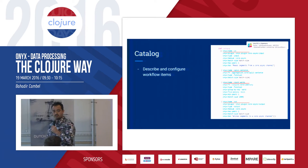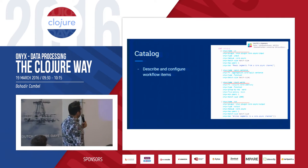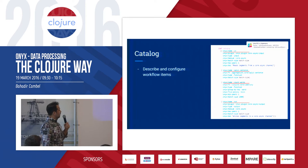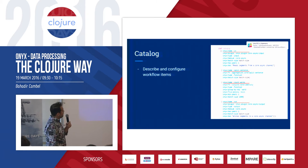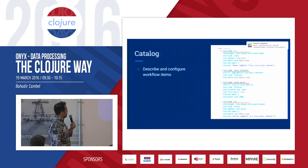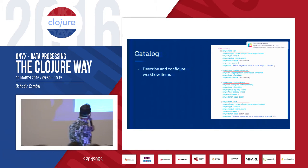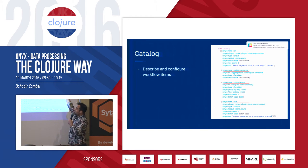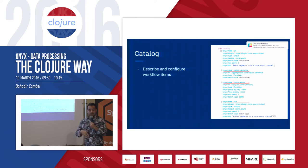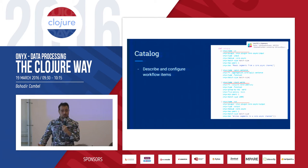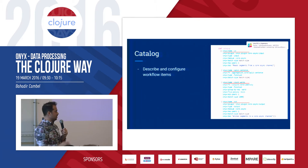The catalog is where you describe your workflow items. You tell Onyx, for example, to read values from a core.async channel — and there's a batch size implemented. Then you have a split-sentence task which calls the split-sentence method in your codebase. There will be a count function which groups your words, and then you write it to another core.async channel. Until here you have seen zero calls to Onyx or any deep configuration — it's very simply defined.